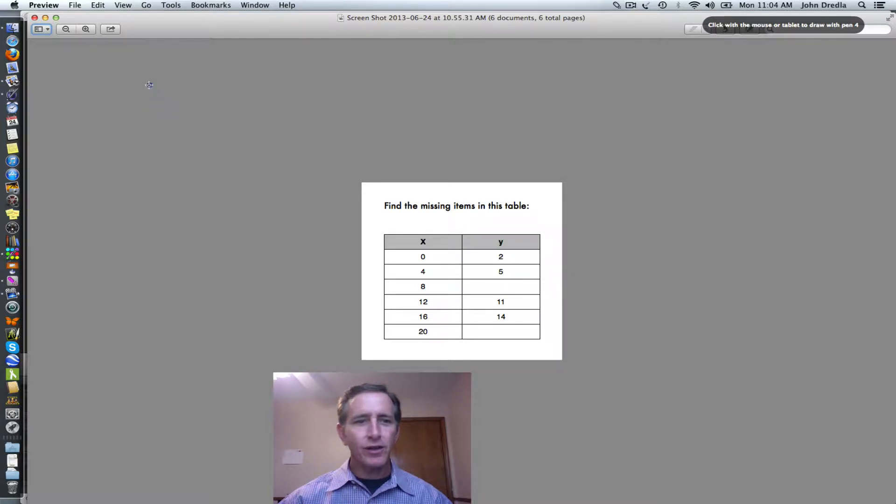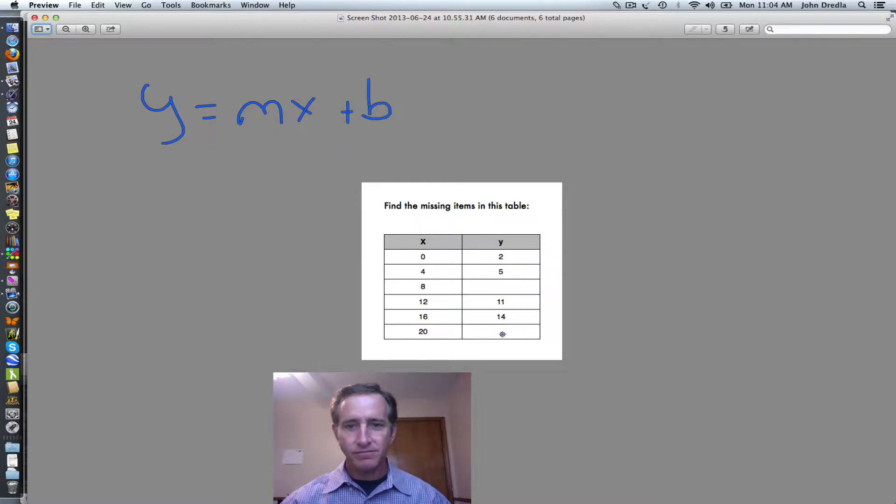We're going to use the standard equation of the line y equals mx plus b to find the missing items in this table. To do that, we'll need to know what the y-intercept is and what the slope is.